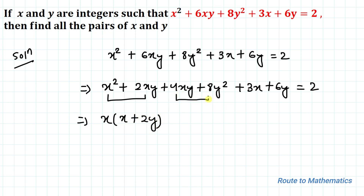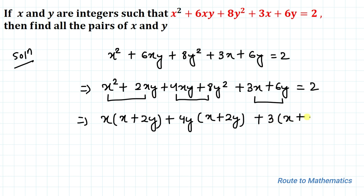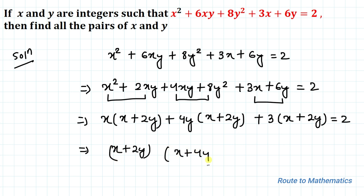Similarly, taking 4y common from the next two terms gives 4y multiplied with (x + 2y), and taking 3 common from the last two terms gives 3 multiplied with (x + 2y) = 2. Now taking (x + 2y) common from all terms, we have (x + 2y)(x + 4y + 3) = 2.